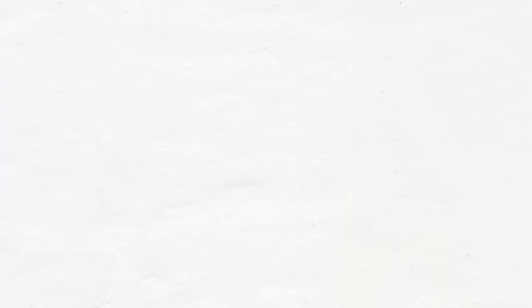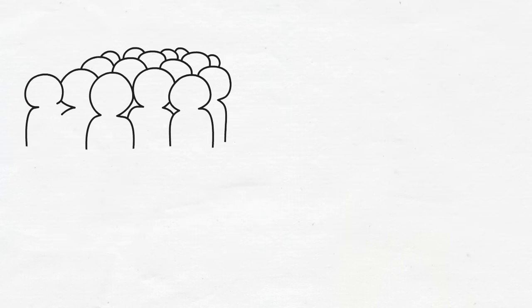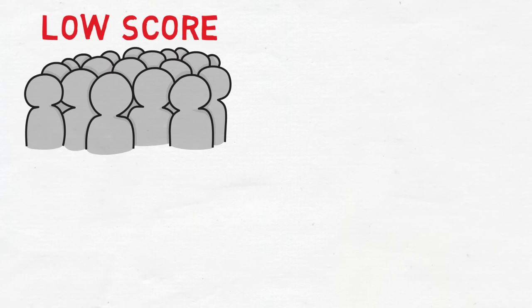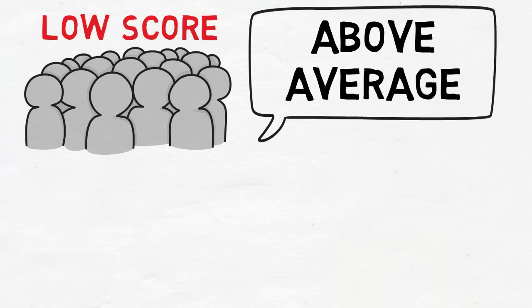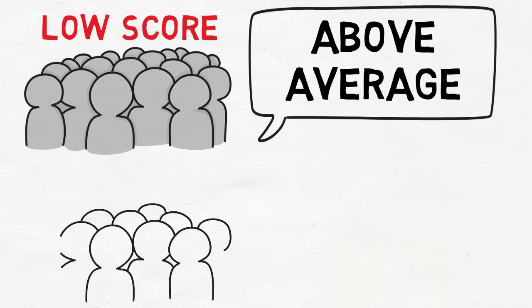This is when Dunning and Kruger found something fascinating. They found that the students who scored the lowest in these cognitive tasks always overestimated how well they did, and not just by a little, but by a lot. They thought they scored above average while their score was one of the lowest. So not only were those students incompetent or less skilled in those areas, but they obviously didn't even know just how bad they were at them.